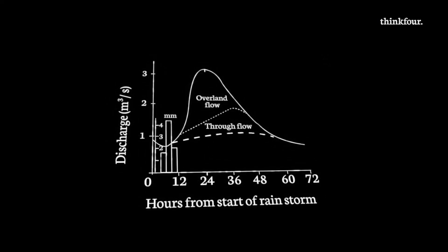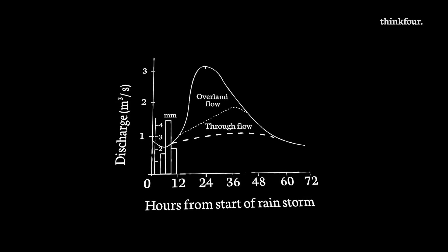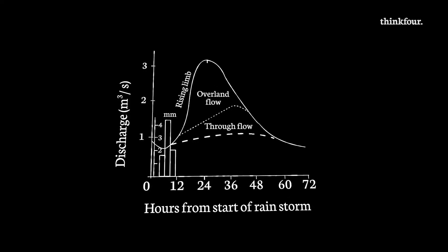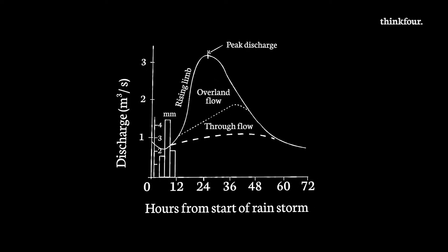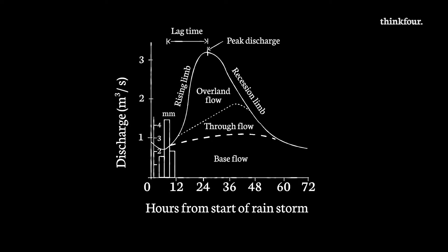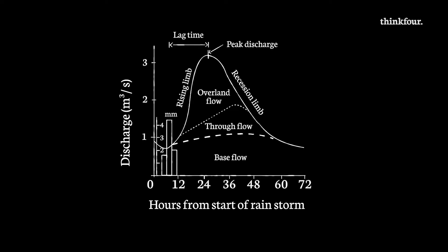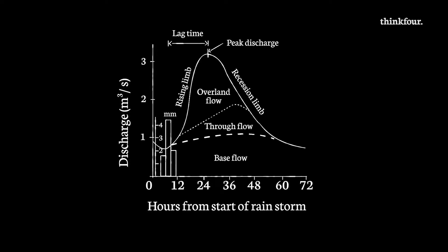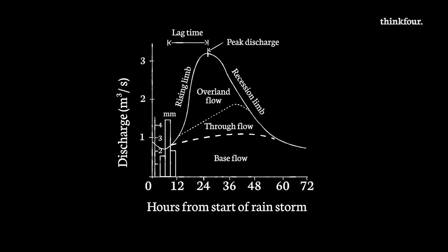So where do you start? Begin by describing the graph — that's the easy bit. To describe the graph, you should comment on the following features: rising limb, peak discharge, base flow, lag time, and recession limb. Peak discharge, which is the highest point in the line graph, will occur when the river reaches its highest level. You should quote a figure for peak discharge in your answer, remembering to note the unit of measurement: cumecs.